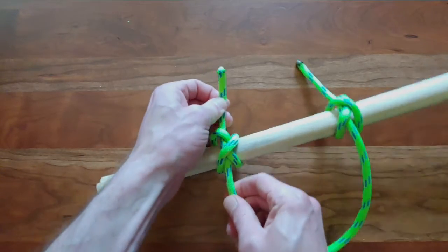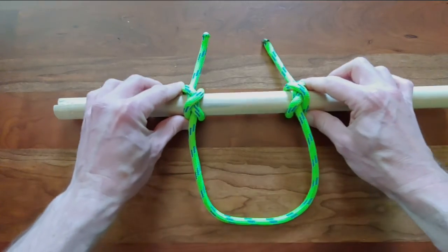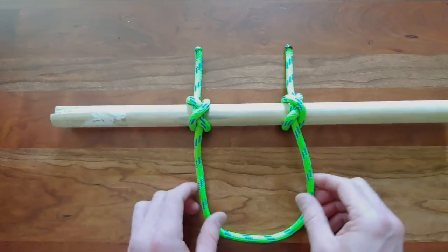Now the constrictor knot is interesting because the tail end there is going to always be perpendicular to the dowel or the surface that you tie it to.